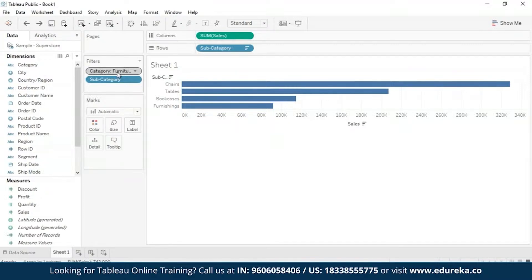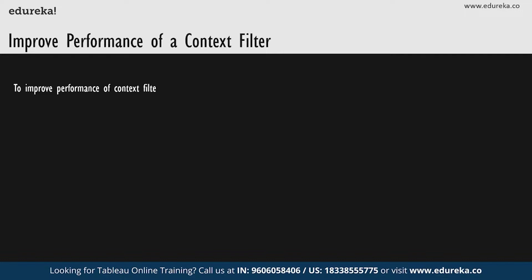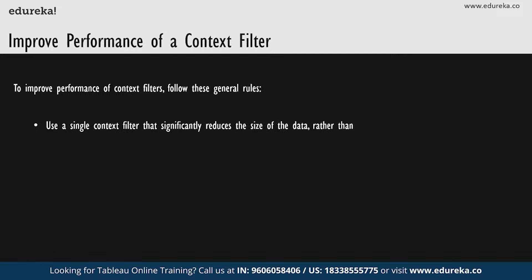Now let's look at a few ways to improve the performance of context filters, especially on large data sources. First, using a single context filter that significantly reduces the size of the dataset is usually much better than applying many context filters. In fact, if a filter does not reduce the size of the dataset by one tenth or more, it is actually worse to add it to context because of the performance cost of computing the context.